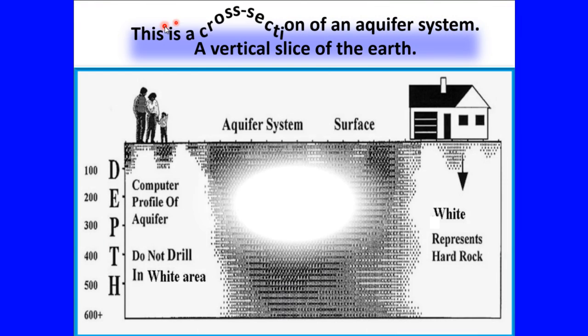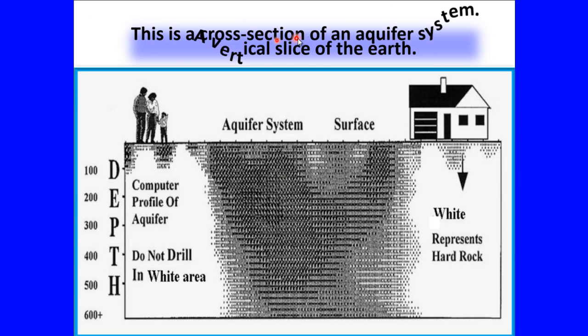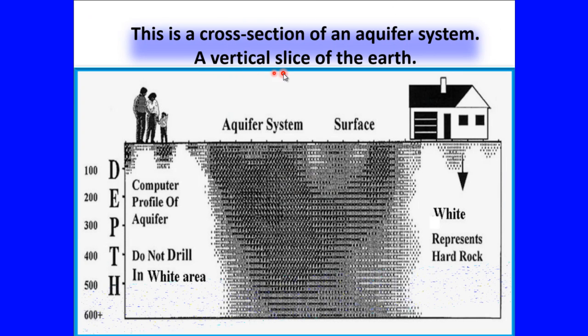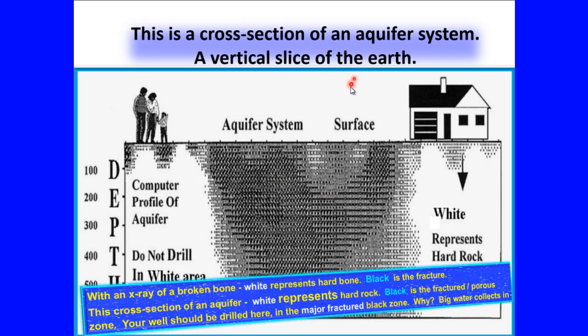This is a cross section of an aquifer system, a vertical slice of the earth. With an x-ray of a broken bone, white represents hard bone, black is a fracture. This cross section of an aquifer, white represents hard rock, black is a fractured porous zone. Your well should be drilled here in the major fractured black zone. Why? Big water collects in major fractures.